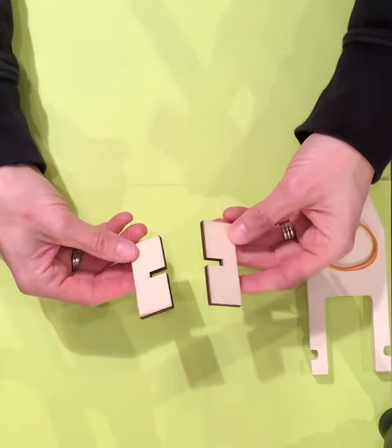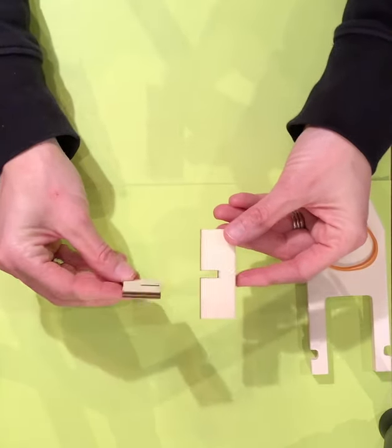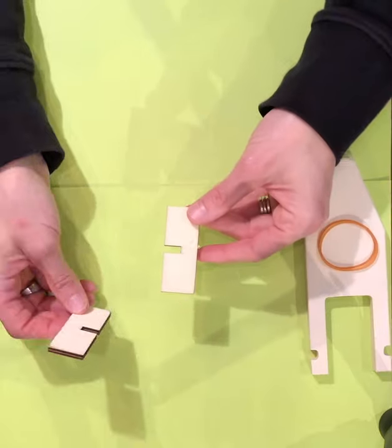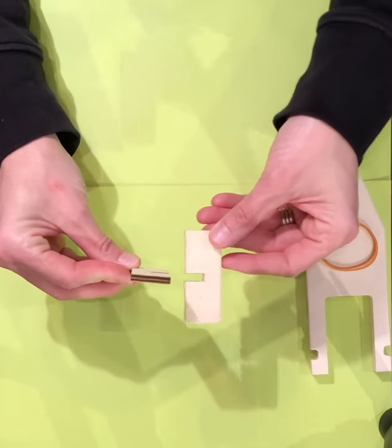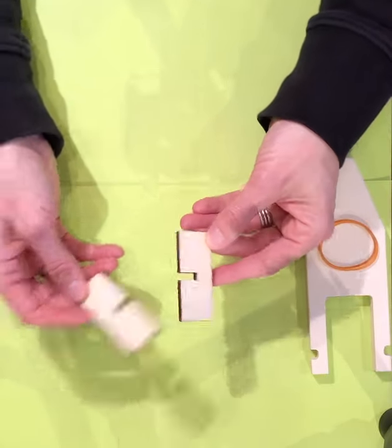The first thing we're going to do is make the paddle for our paddle boat. We're going to take the two rectangular pieces with the notches. You're going to turn one parallel to the surface, one perpendicular, and put those two notches together—they fit just like a puzzle piece.